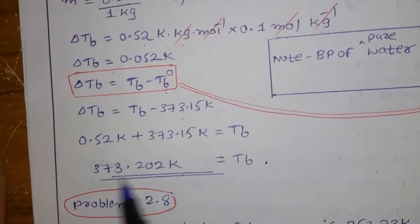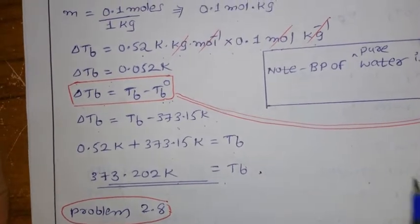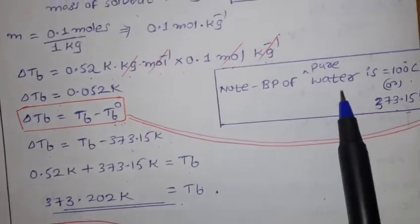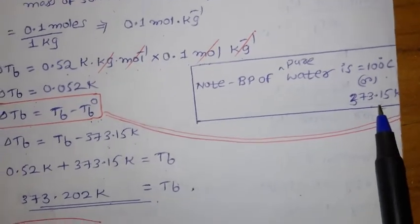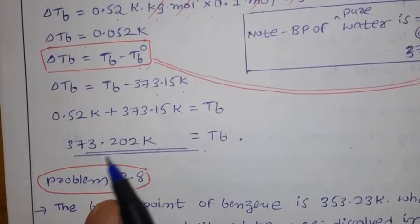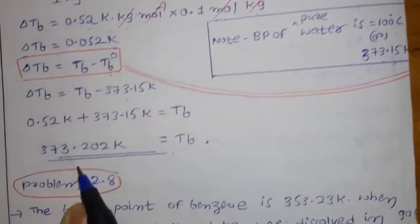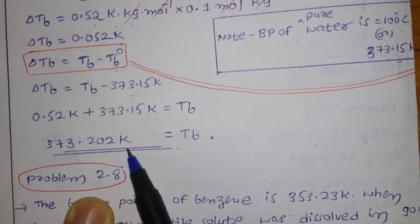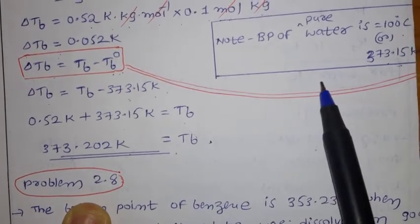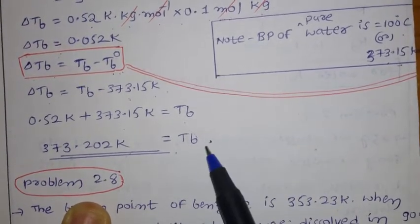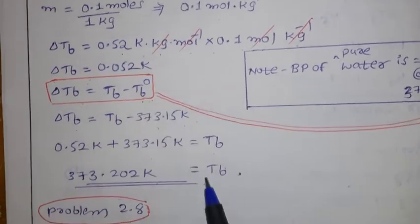Rearranging: Tb = Tb° + ΔTb = 373.15 + 0.052 = 373.202 kelvin. So the boiling point of pure water was 373.15 K, and after adding the non-volatile solute it increased to 373.202 K — a rise of only 0.052 kelvin. This small increase is called elevation of boiling point.